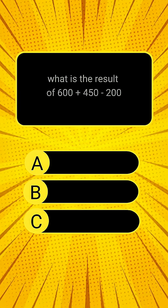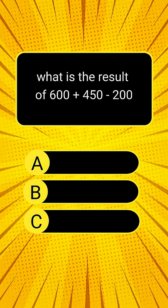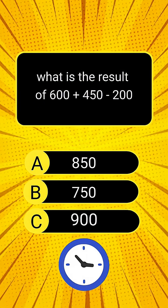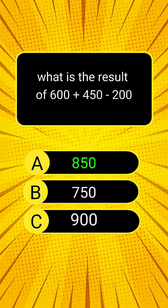Question 2: What is the result of 600 plus 450 minus 200? 850.